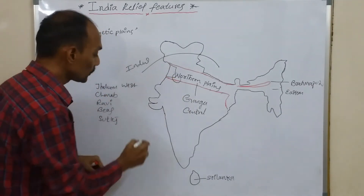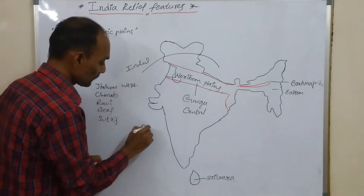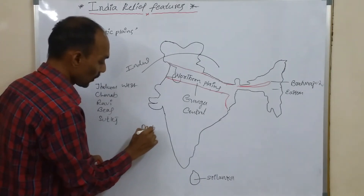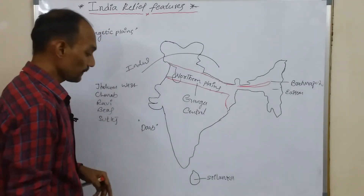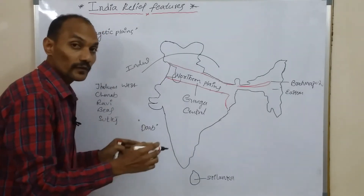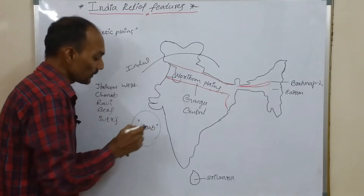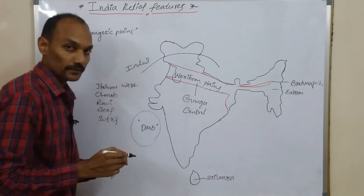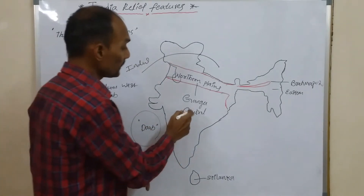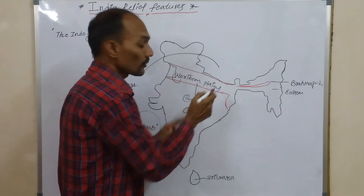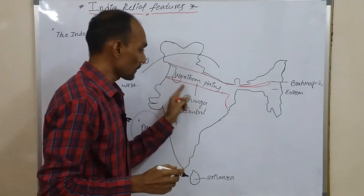In this region we can see Doab. Doab means fertile land between two rivers. It is a Hindi word — 'Do' means two and 'Ab' means water.